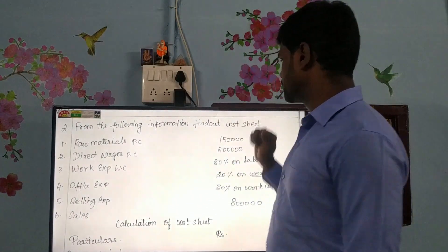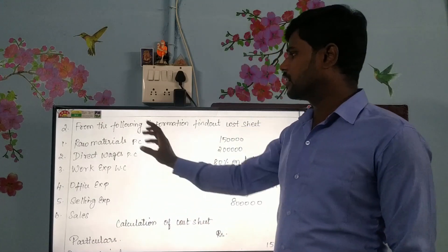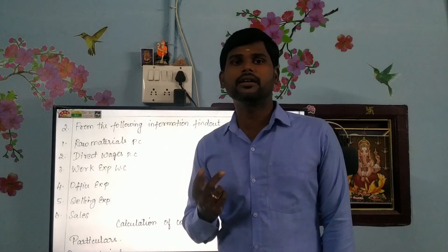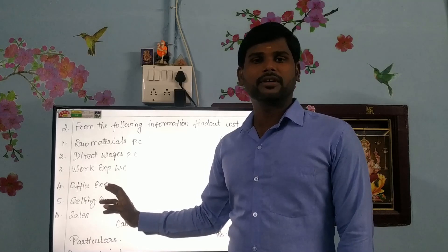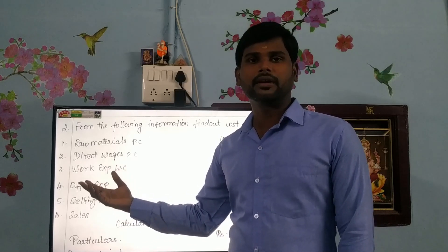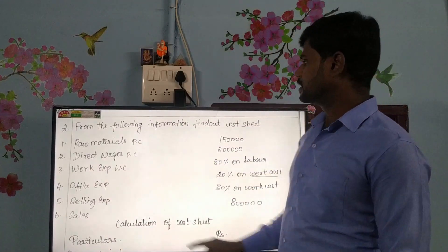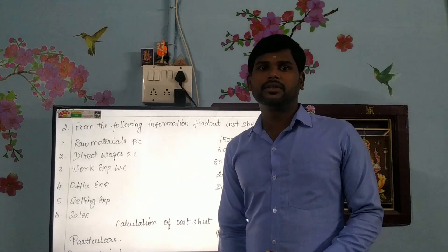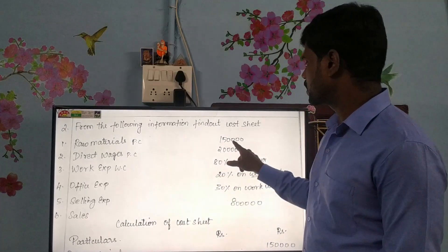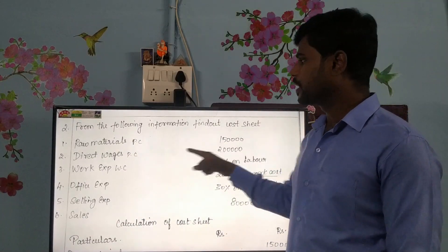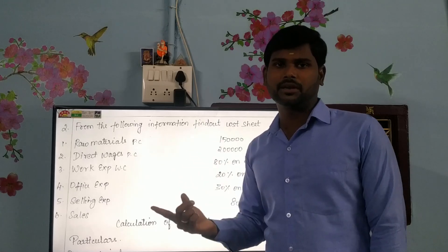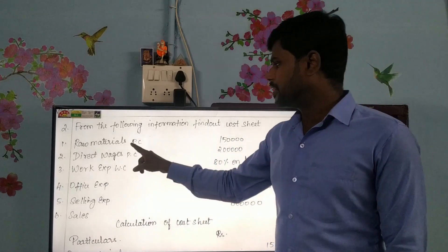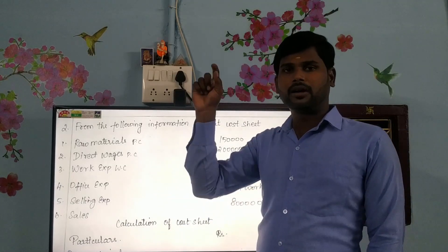From the following information, find the cost sheet. The procedure is the calculation of cost sheet. Particulars, rupees. Raw material — this is the basic material, prime cost — Rs. 1,50,000. Next, direct wages — any direct wages, direct expenses, direct labour — these are prime cost items. The direct wages value is Rs. 2,000. Then raw material plus direct wages gives the prime cost. Calculation of cost sheet: particulars, rupees.